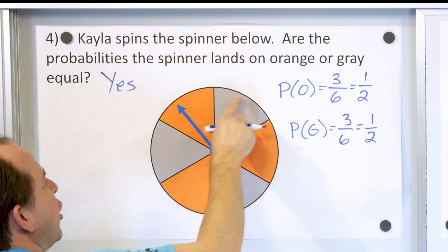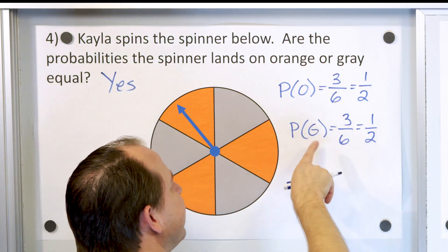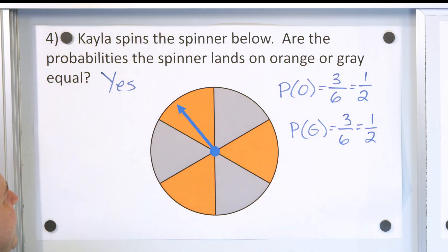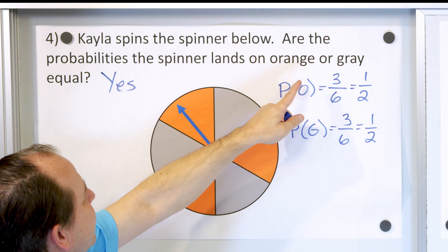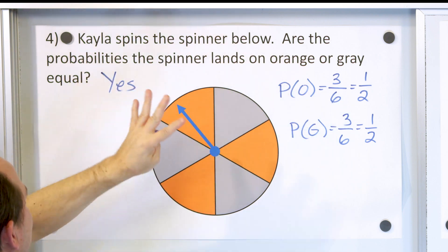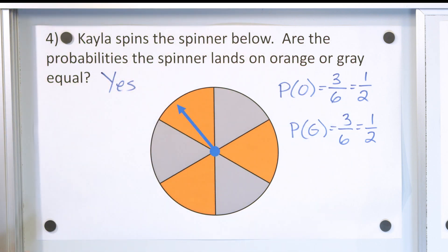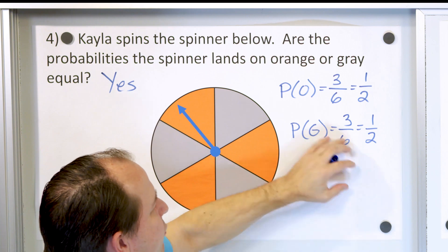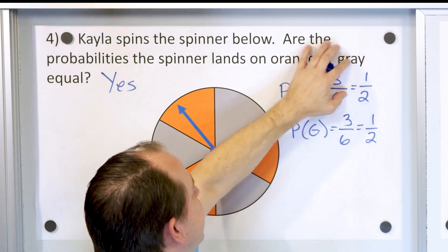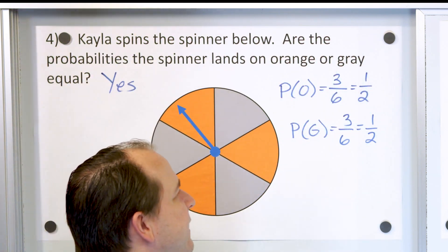So the probability of landing on orange is exactly the same as the probability of landing on gray. The probabilities of landing on orange or gray are equal — yes, they are. And because of this, this is a uniform probability distribution because the outcomes are equally likely.